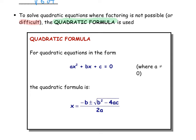The b that appears in the formula is really just the coefficient on our linear x term. The a in the formula comes from the coefficient of our squared term and appears twice. The constant term c appears as well. So the quadratic formula reads: x equals negative b plus or minus the square root of b squared minus 4ac, all divided by 2a.